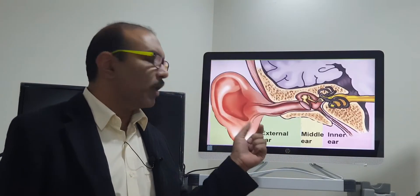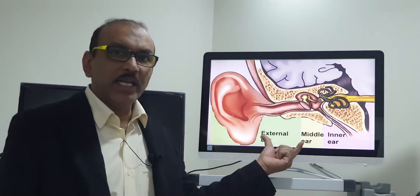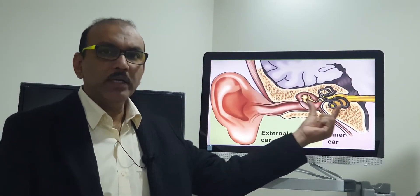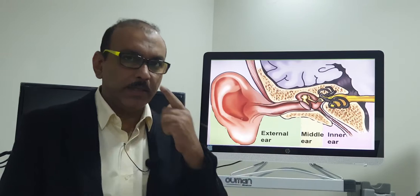Let me give a small introduction of the ear structure first. The ear can be divided into three parts: one is the external ear, this is the middle ear, then the internal ear.